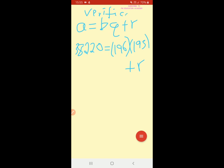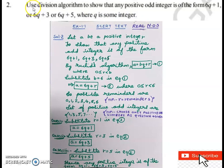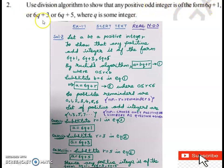The next question: use division algorithm to show that any positive odd integer is of the form 6Q + 1, 6Q + 3, or 6Q + 5, where Q is some integer. Observe the keyword 'odd' and the numbers 1, 3, and 5, which are all odd. The B value is 6 in all three forms.